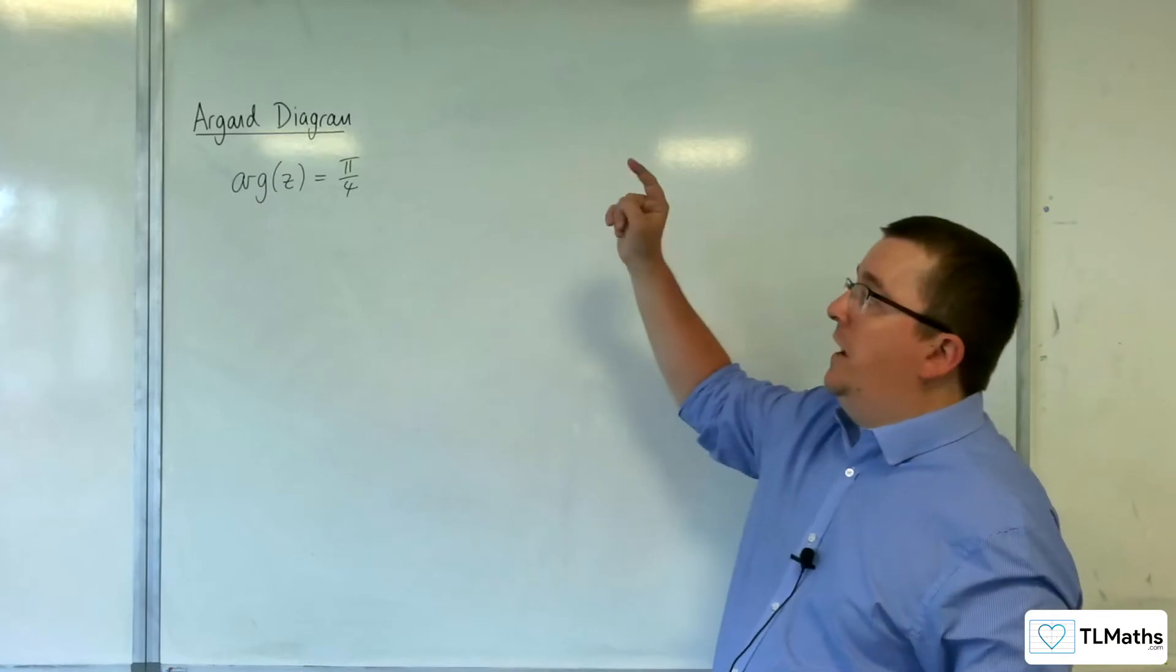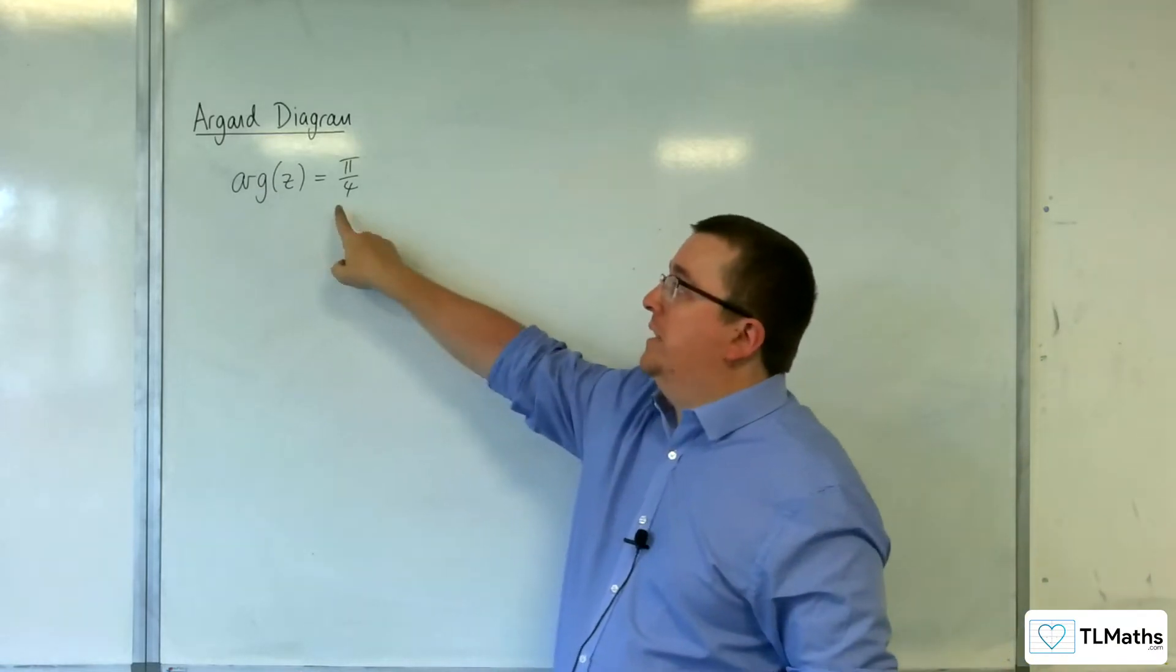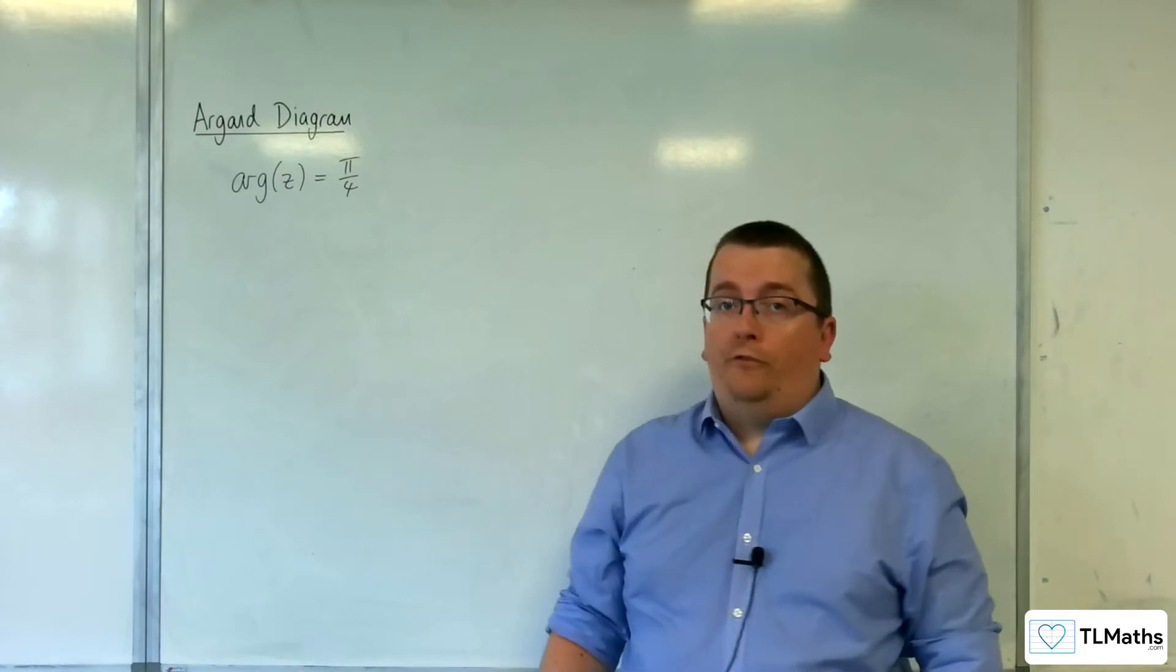Okay, so in this video I want to investigate what this is on an Argand diagram. So the argument of z is equal to pi over 4.